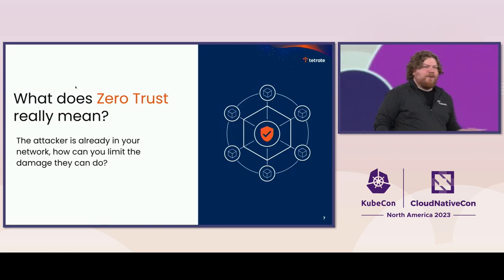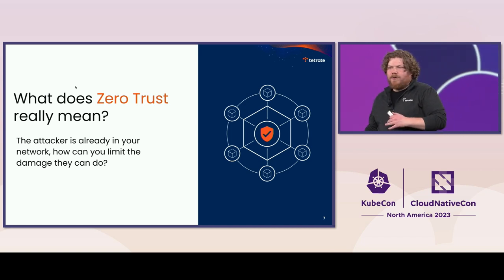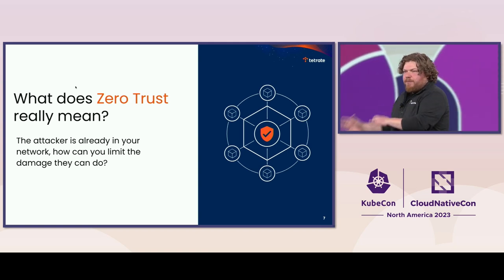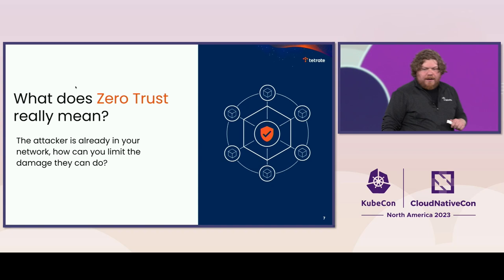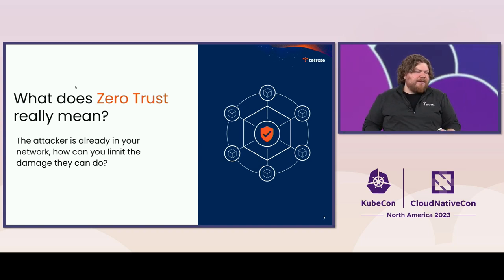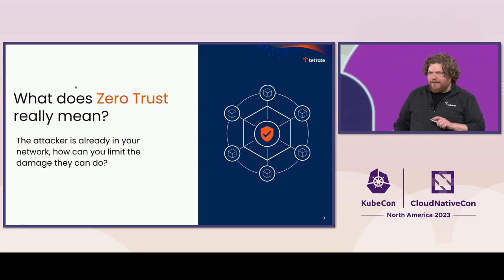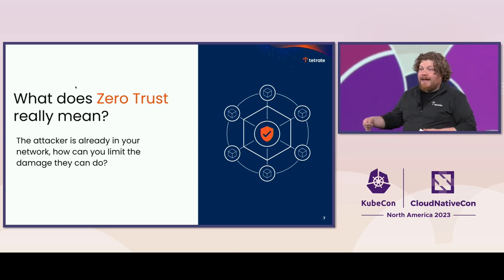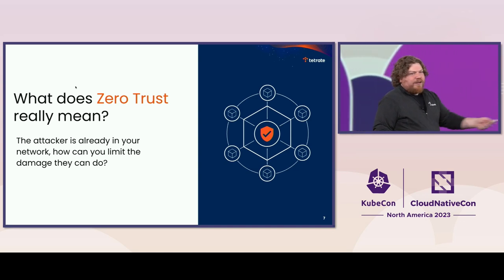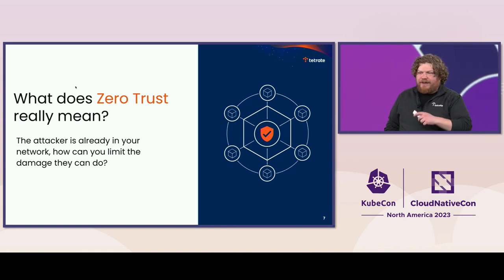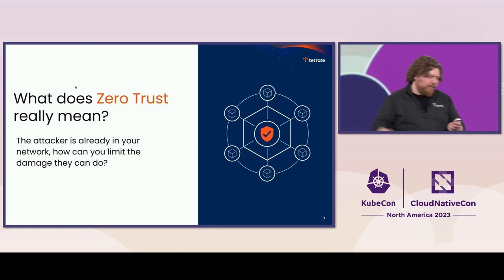So first, let's define Zero Trust. I actually hate the name. It should really be about Zero Implicit Trust. The problem is not trust — the problem is when it's not made explicit, when we don't know what access is happening or we're not authorizing and authenticating it. One framing I give is: if I were to pick any workload in your infrastructure and expose it to the internet, what's the impact? What damage could somebody do? Another way of phrasing that is: if a motivated attacker can already be in your network, how do you limit the damage they can do?